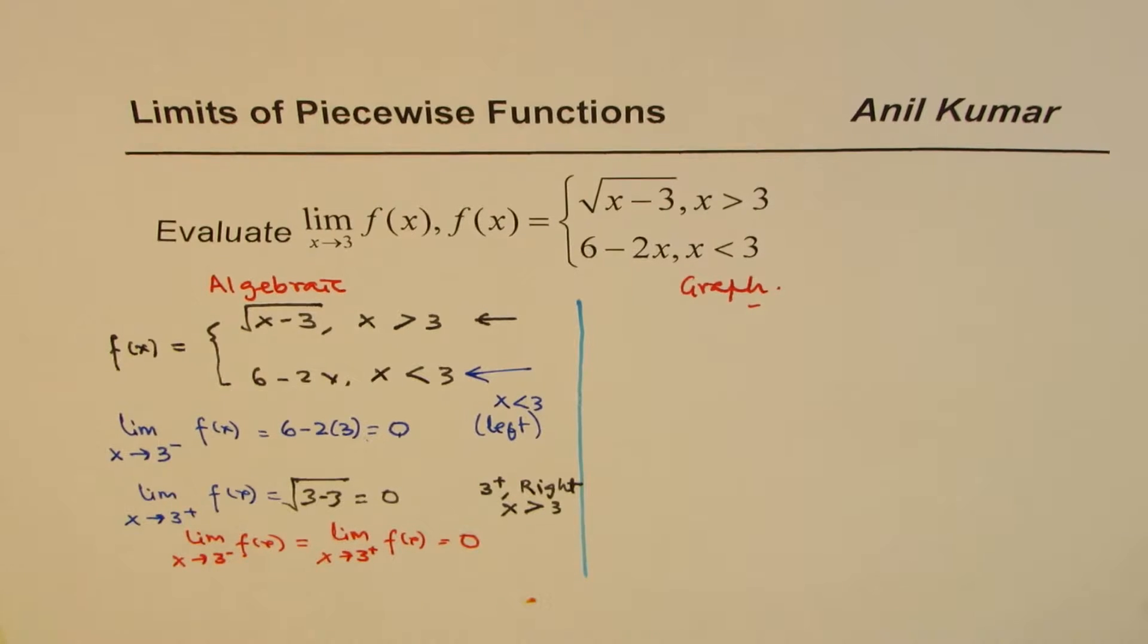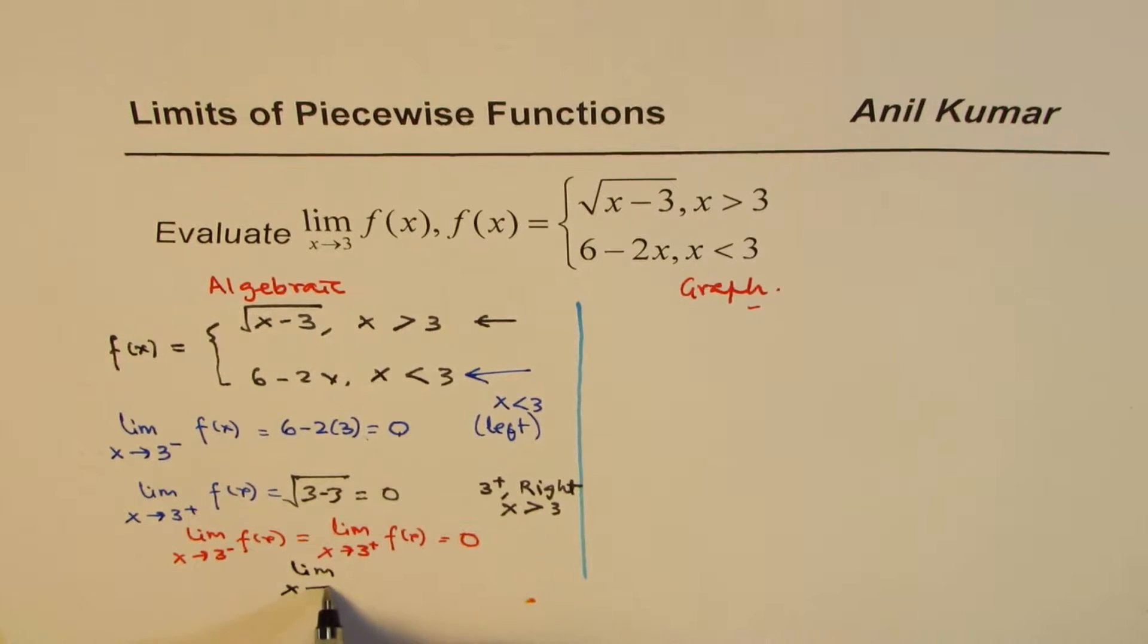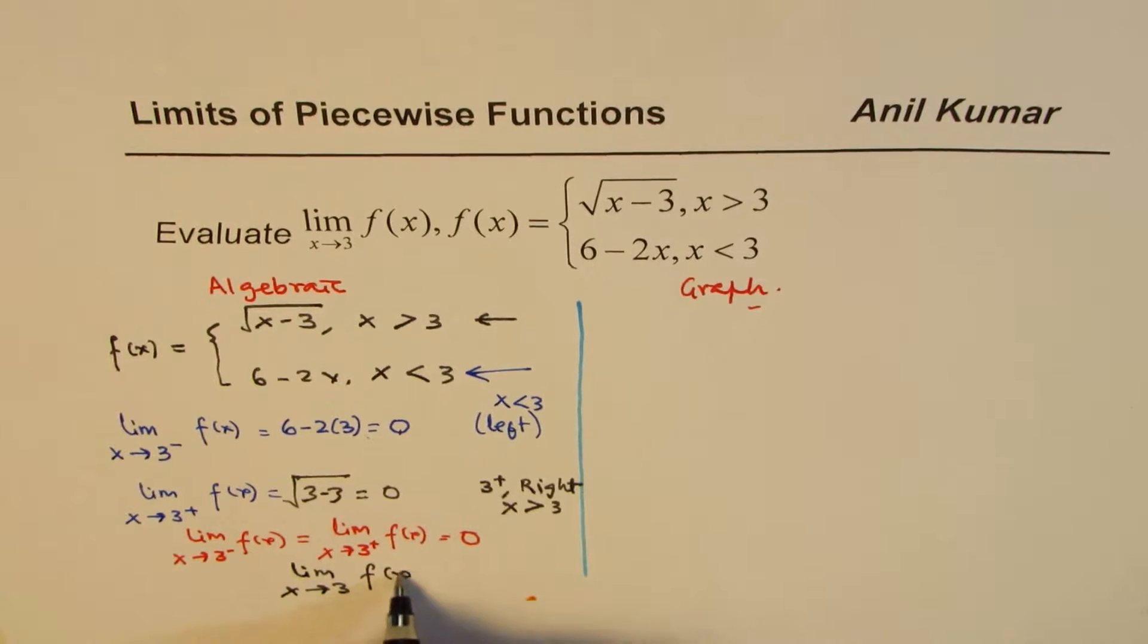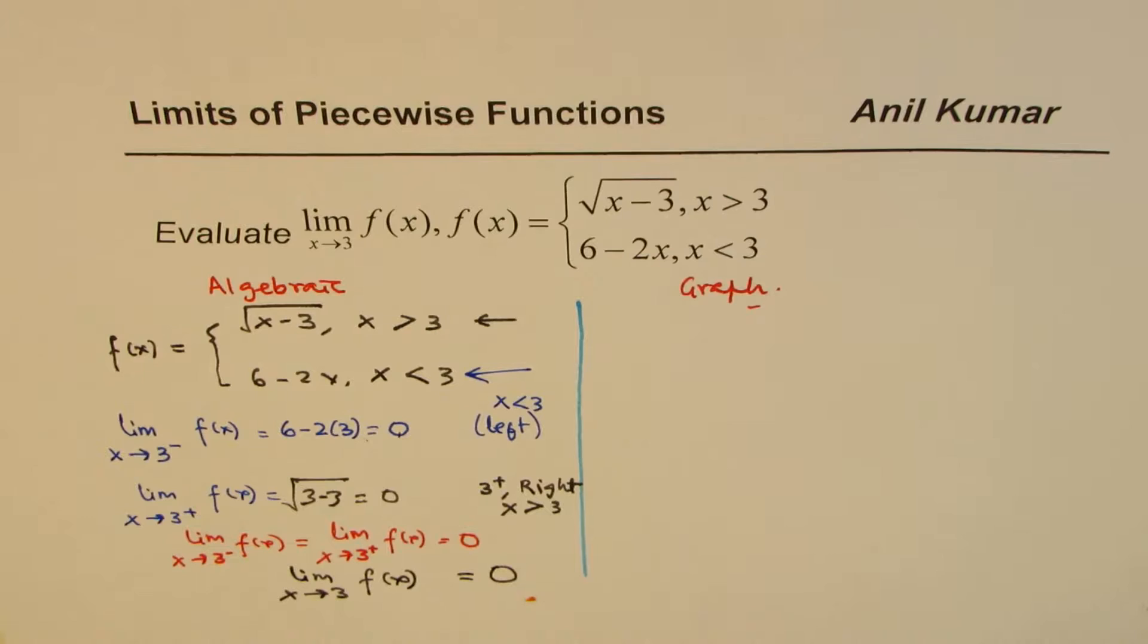So we can write the answer, which is limit x approaches 3 for f of x is indeed equal to 0. You get it. So that is the algebraic method.